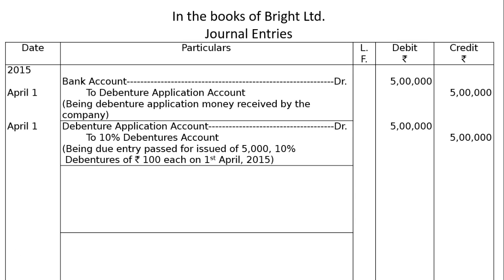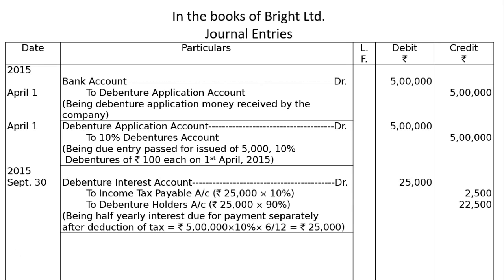Next is payment of interest — issued at par, redeemable at par. On 30th September (6 months after issue), Debenture Interest account is debited. Interest for half-year: 10% of Rs 5 lakh = Rs 50,000 for the full year, so Rs 25,000 for half-year. To Income Tax Payable account: 10% TDS on Rs 25,000 = Rs 2,500. To Debenture Holders account: 90% of Rs 25,000 = Rs 22,500. Being half-yearly interest due for payment after deduction of tax (Rs 5 lakh × 10% × 6/12 = Rs 25,000).